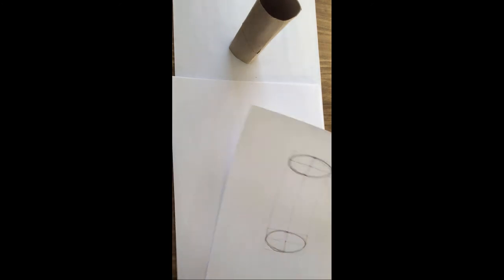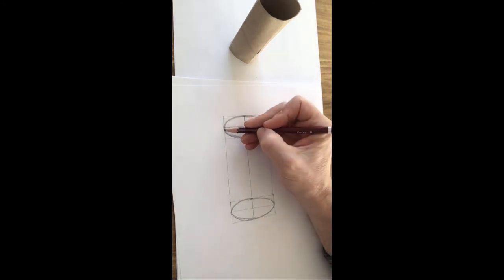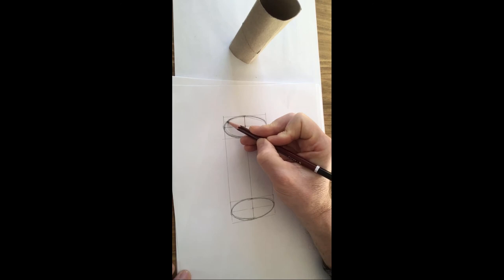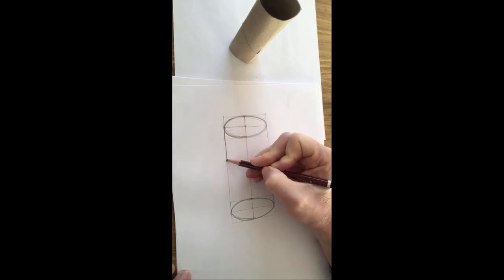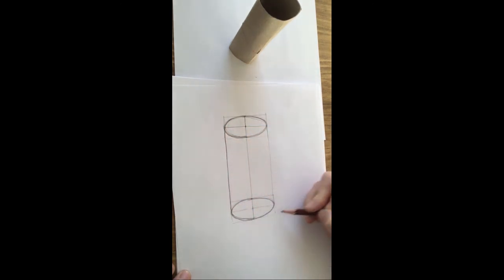So there is my ellipse, top and bottom. From the back end of the ellipse it comes down, comes straight down, and curves round the front.